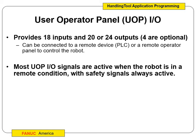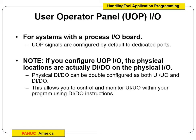We have the user operator panel, the UOP. On those there are 18 inputs and 20 or 24 outputs — four are optional — so that's why it can vary anywhere between 20 and 24. We can connect a remote device, so our PLC. We use the 870 Trainer Station 5 hookups to operate the robot programs. Most of the signals are active when the robot is in a remote condition, and we always have all the safeties in effect there.